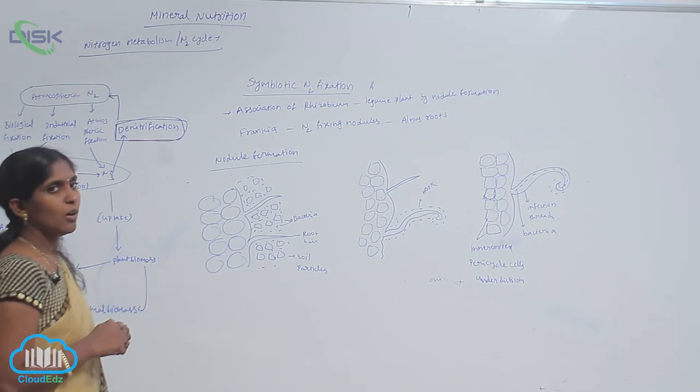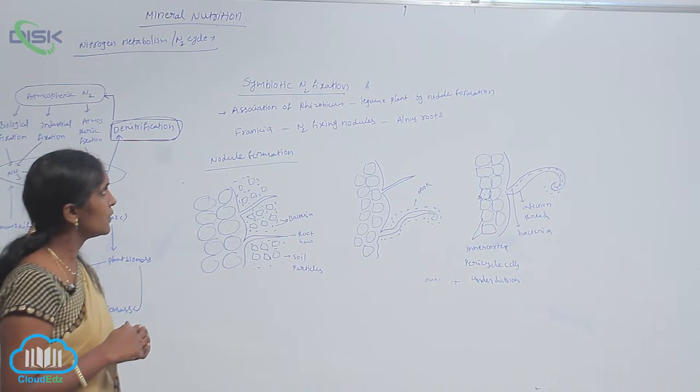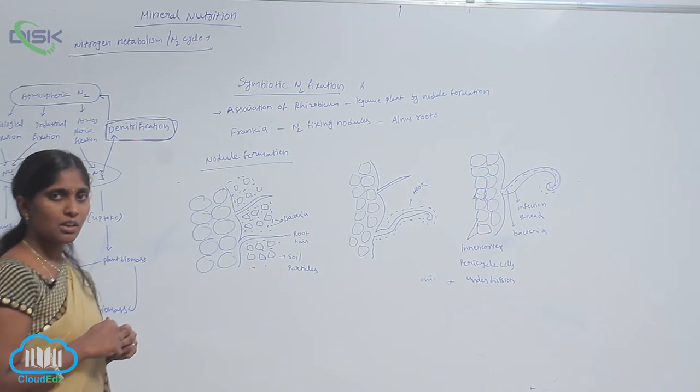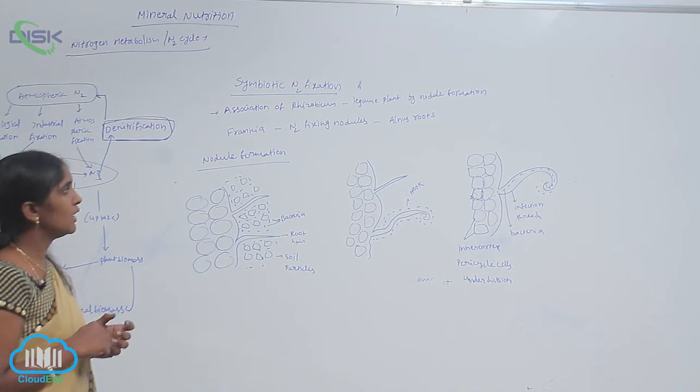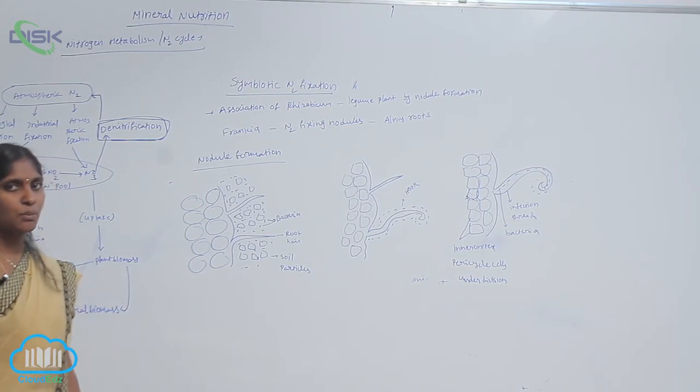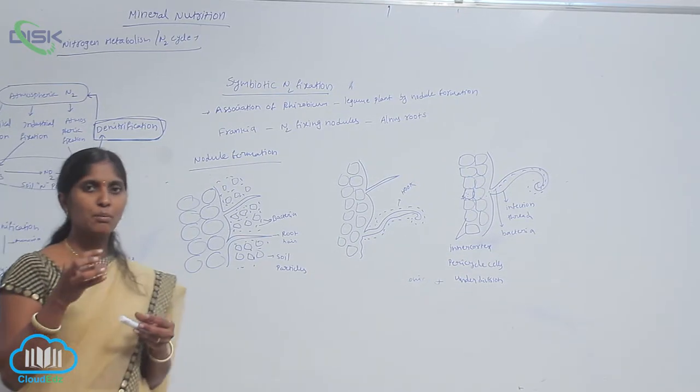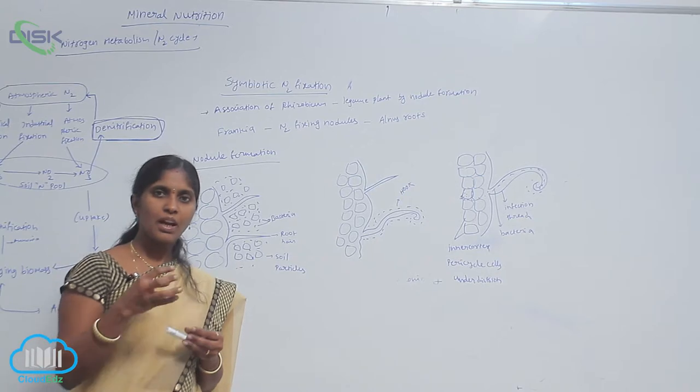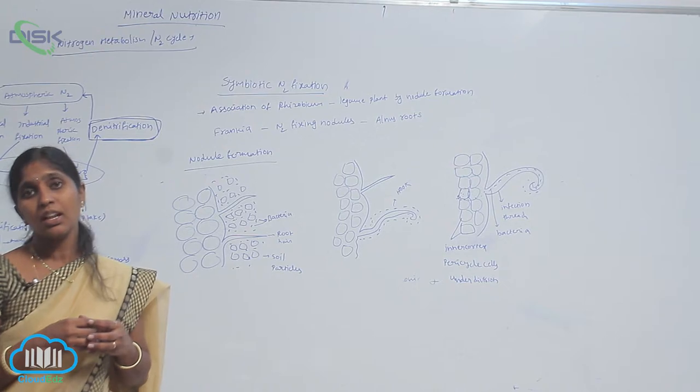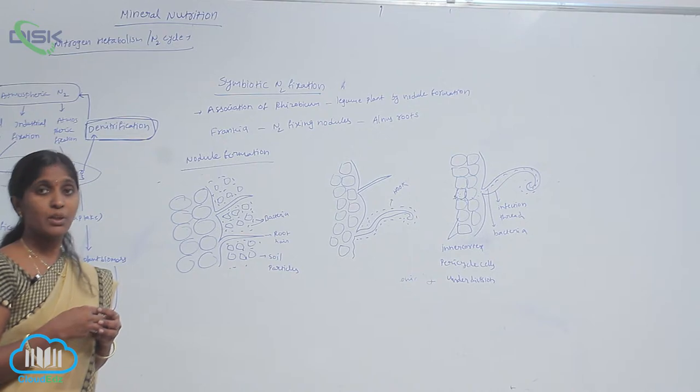Franchia and alnus are also association of symbiosis. The N2 fixing nodules are produced here, but here the plant is non-leguminous plants. How the nodules are produced? What nodule consist? The nodule consist number of bacteria, nitrogenase enzyme and leghemoglobin which promotes the nitrogen fixation.